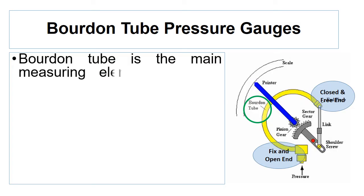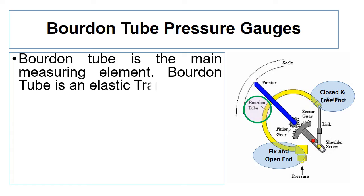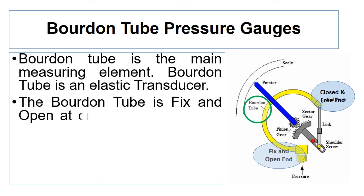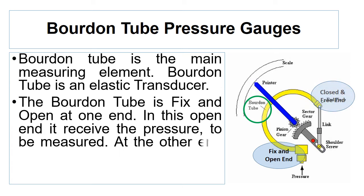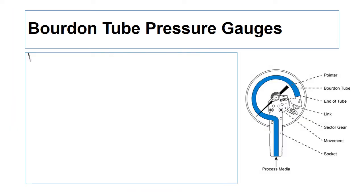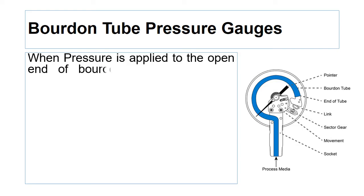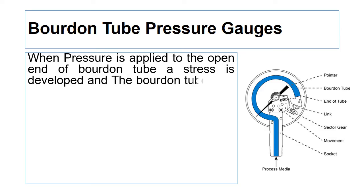In the Bourdon tube pressure gauge, the Bourdon tube is the main measuring element — we can say the Bourdon tube is an elastic transducer. The Bourdon tube is fixed and open at one end, where it receives the pressure to be measured. At the other end, the tube is closed and free for movement. When pressure is applied to the open end, a stress is developed and the Bourdon tube tries to straighten up.